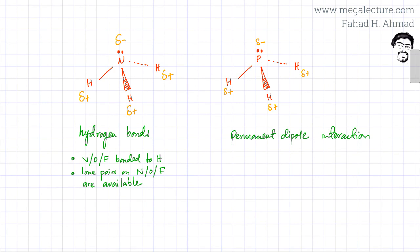The conditions for hydrogen bonding are that the most electronegative elements—nitrogen, oxygen, or fluorine—should be bonded directly to hydrogen, which is true in this case. Nitrogen is very electronegative, creating a stronger dipole. The lone pairs on nitrogen, oxygen, or fluorine should also be available.